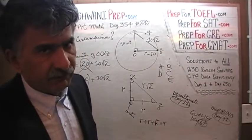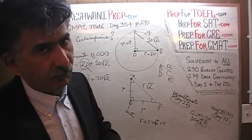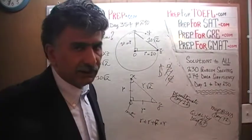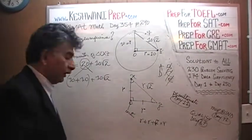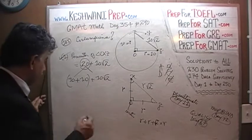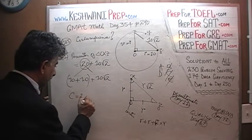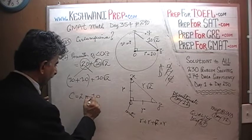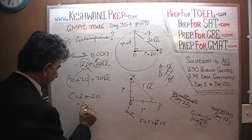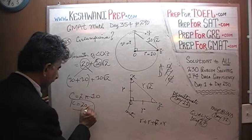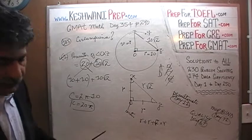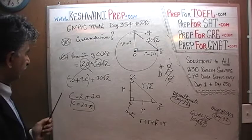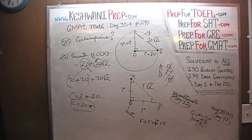Now that we established the first statement by itself is enough, we know the answer cannot be B, C, or E — it would have to be either A or D. Just for curiosity, we can finish it up. Circumference is simply 2 pi R. R is 10, so the circumference is 20 pi. But we didn't have to calculate that to know the first statement does the job. Let's look at the second statement.